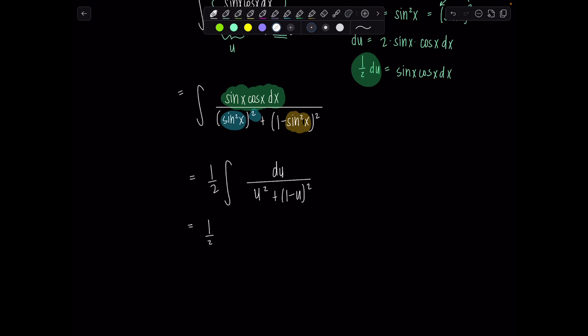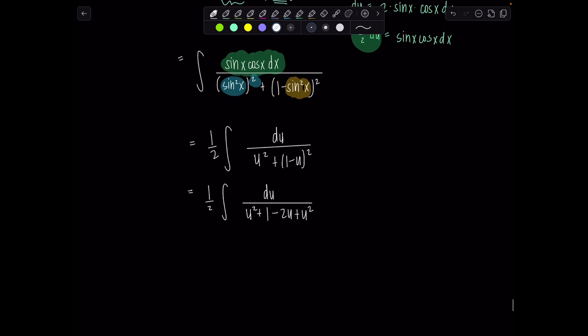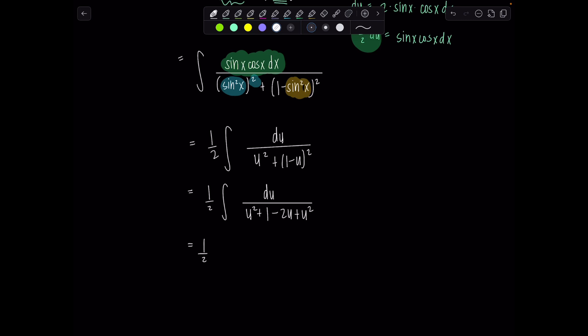And be careful, this sine squared x is u. So then we have plus one minus u squared. Now let's multiply everything out in the denominator. One-half du over, this is going to be u squared plus one minus two u plus u squared. So then this is one-half integral du over two u squared minus two u plus one. Does that factor? No. So then I think to myself, I'm going to need to complete the square.